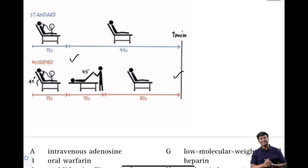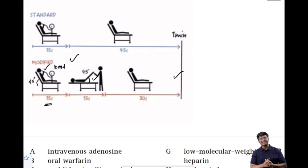After blowing for 15 seconds, quickly reposition the patient — lay the head completely flat and have an assistant raise the legs to 45 degrees for another 15 seconds. Then return the head of the bed to 45 degrees again and continue to monitor for resolution for one minute. Repeat if needed. This is how the modified Valsalva maneuver is performed.